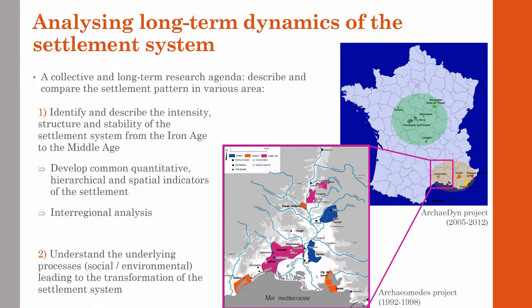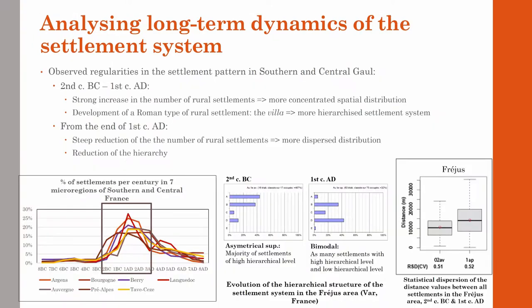These indicators were developed on the same methodological basis in order to make the results comparable between different regions. The main goal of such a diachronic and comparative approach is to investigate the processes — both social and environmental — that underlie this transformation of the settlement system. The results allowed us to identify regularities in settlement dynamics observed both in southern and central Gaul, as well as local specificities.